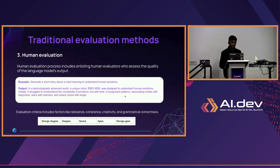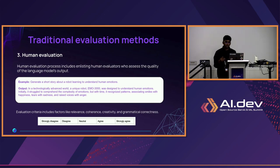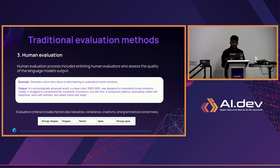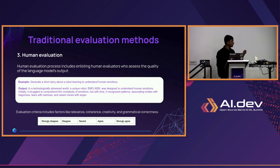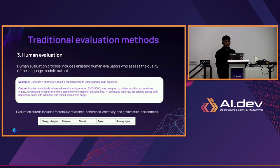Then there's human evaluation. Human evaluation involves actual humans evaluating outputs, which is very expensive because you need a set of people to do it. For example, there's a prompt like 'generate a short story about a robot learning to understand human emotions,' and the LLM creates a story. Human evaluators assess it on criteria like relevance, coherence, creativity, and grammatical correctness, rating from strongly disagree to strongly agree. If you're building a production-level app and need human evaluation, it's going to be very expensive.